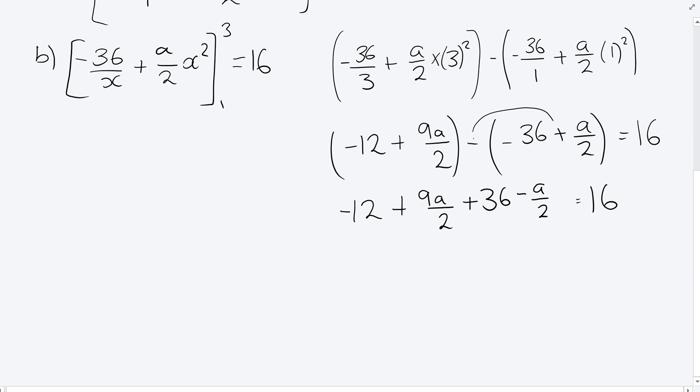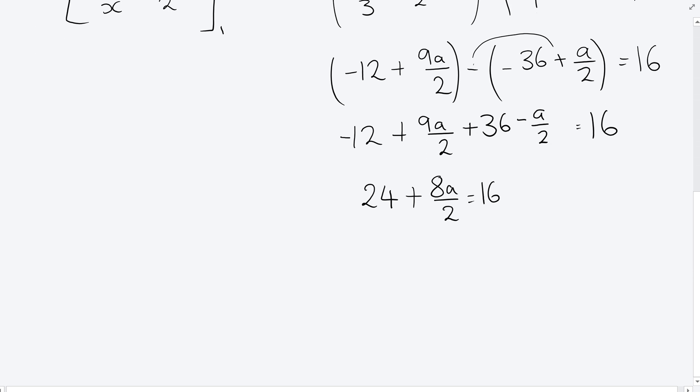So I've got 36 minus 12, which is 24. And 9a over 2 minus a over 2, so plus 8a over 2 equals 16. Now from here, subtract the 24 from both sides. 8a over 2 equals 16 minus 24, minus 8, times by the 2. 8a is minus 16.